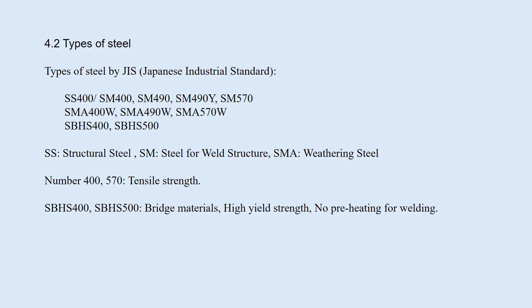As for symbols, SS or SM shows the steel type and the number 400 or 570 shows the tensile strength. SM400W, SM490W, and SM490Y are weathering steels, which have good anti-corrosion property.